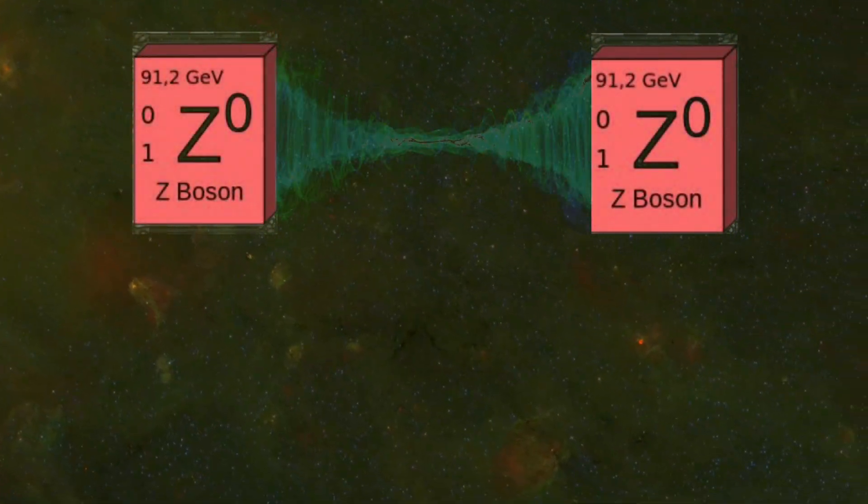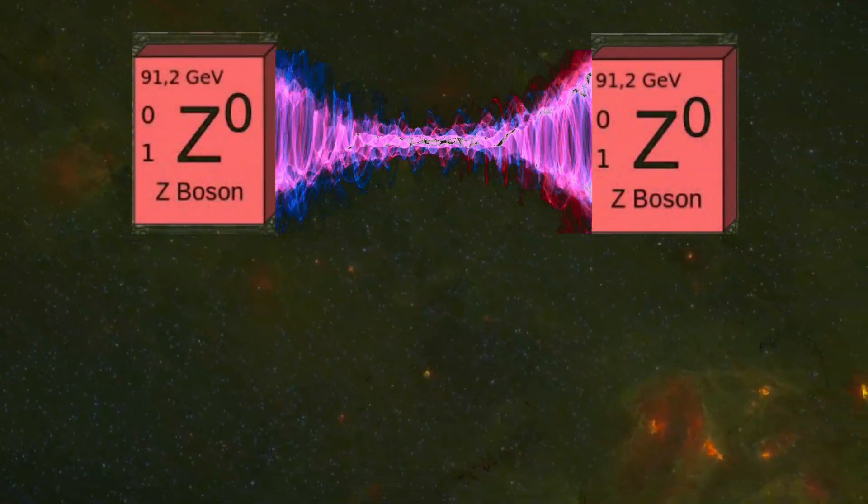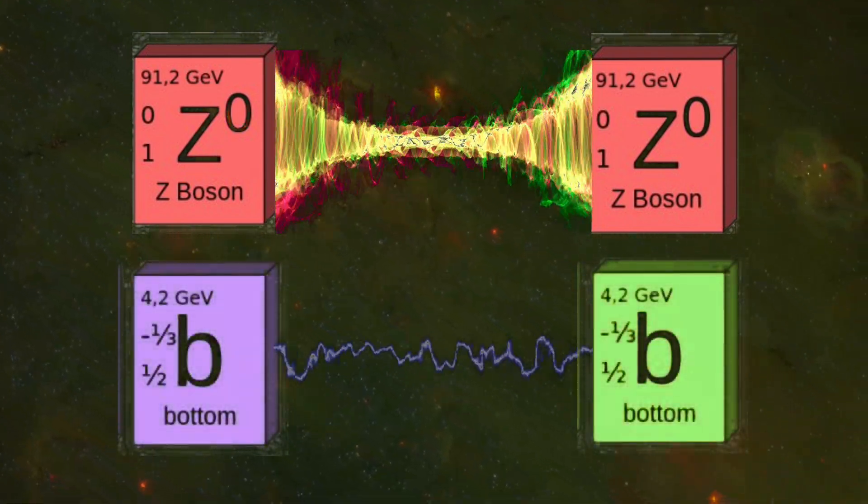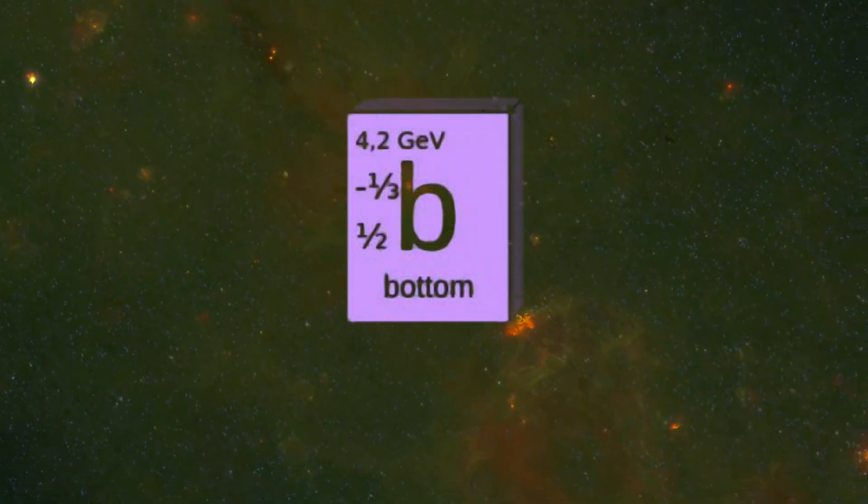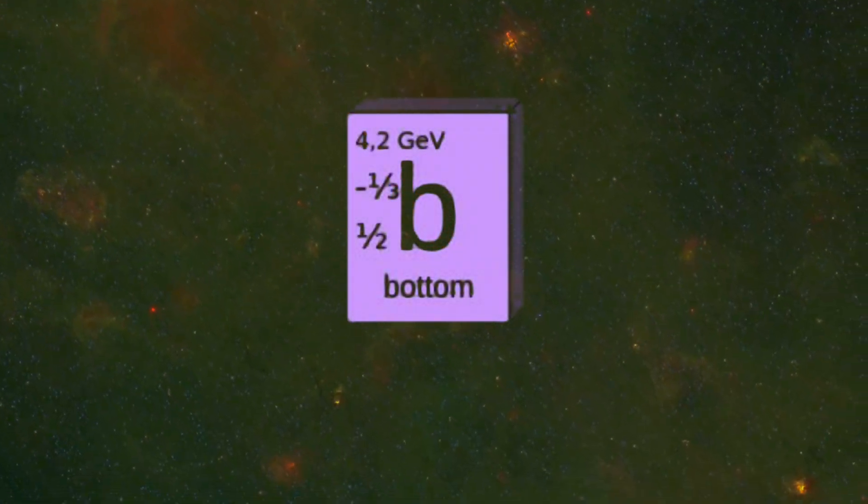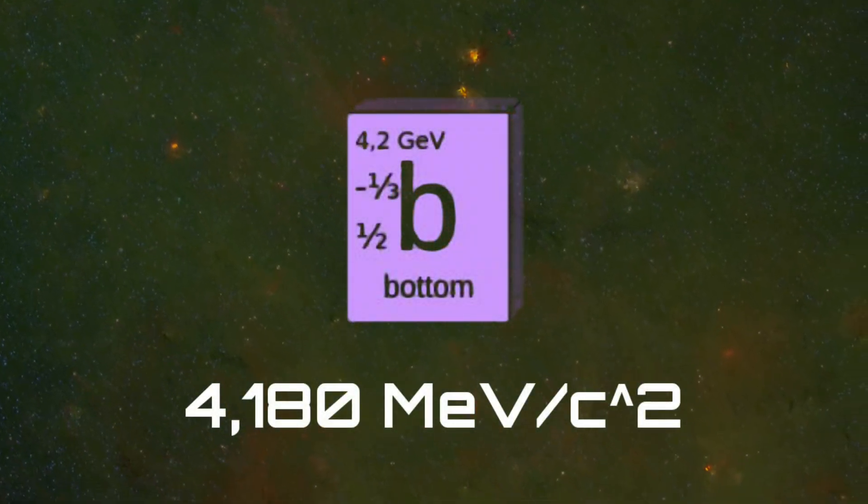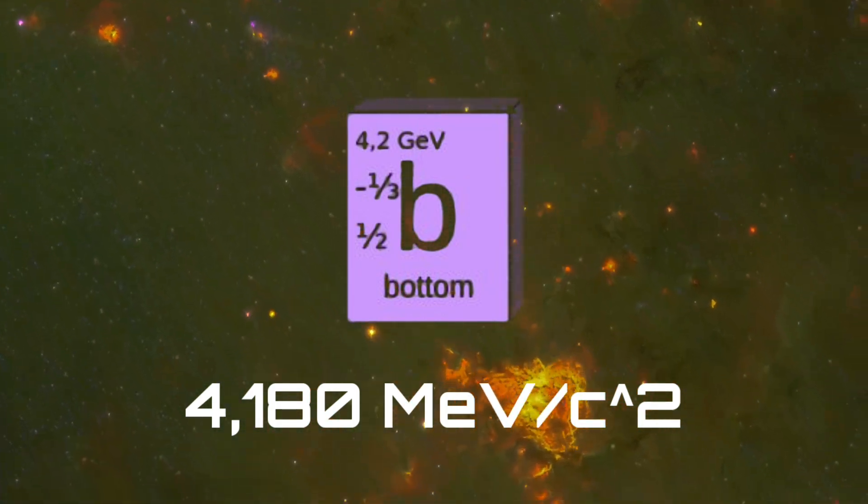The most massive particle in the fermions is the bottom quark with 4180 megaelectrovolts times the speed of light squared.